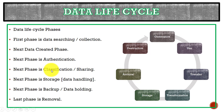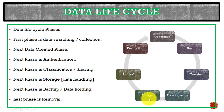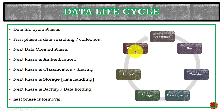In the next phase is the authentication phase, where we check that only authorized users can access the data. The next phase is classification or sharing — that is the transfer of data, shared only with authorized persons. After that is storage or data handling, then backup and data holding, and finally data destruction — that is data removal.